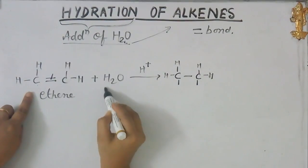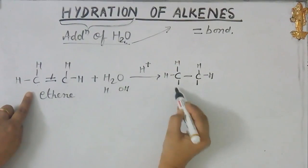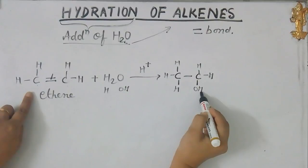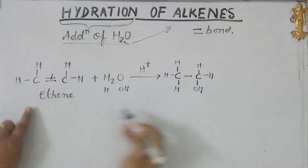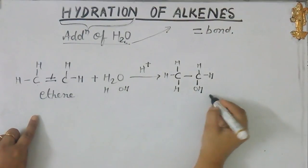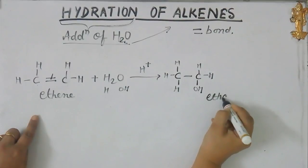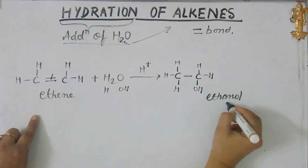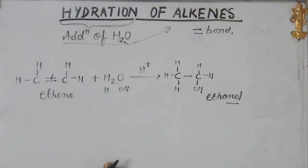Now this water as H and OH will be added to this molecule. So the ethene is now converted into ethanol. So basically this is the overall reaction. But as I told you, the mechanism of this reaction will be asked to you.